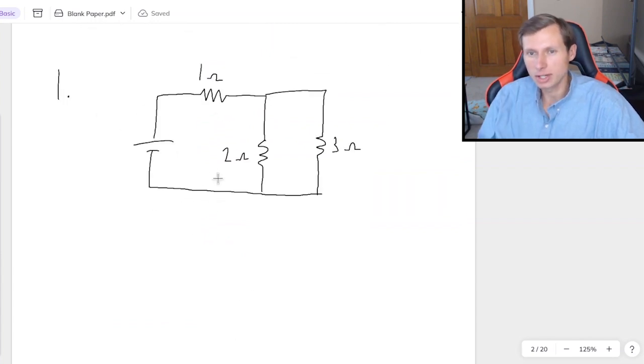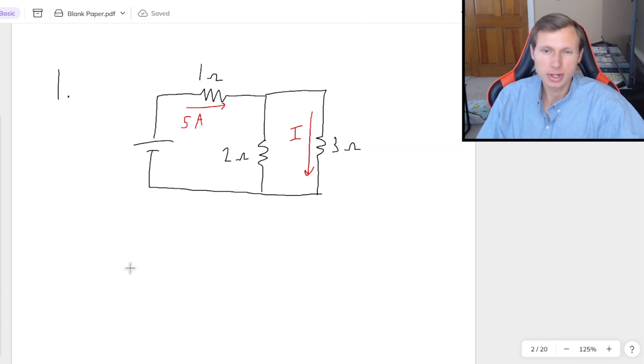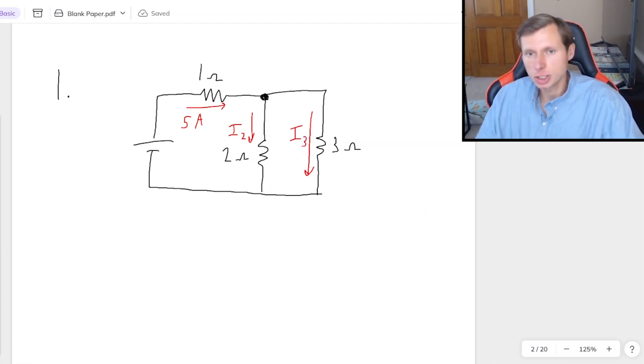So here we have some circuit with three resistors, these two in parallel. And let's say I don't give you the voltage of the battery, but instead I'll give you the current through this 1 ohm resistor. And let's say that's 5 amps. And my question is going to be, I want you to find the current going through the 3 ohm resistor path. And so here's what I do with KCL. Let's call this current here I2 and this current here I3. And this is the junction that we're looking at, that T-shaped portion right there.